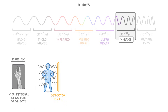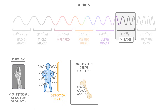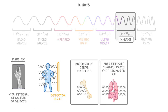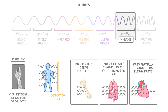This works because X-rays will be absorbed by dense materials, like bones, but will be able to pass straight through the parts that are mostly air, like our lungs and intestines, and they'll only pass partially through the fleshy parts, like our heart.